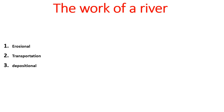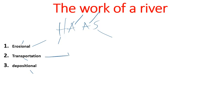Now we look at the work of a river: the erosional process, the transportational process, and the depositional process. Erosional processes are remembered using the mnemonic HOUSE — hydraulic action, abrasion, attrition, and solution. Transportation processes use the T3S mnemonic — traction, saltation, solution, and suspension.